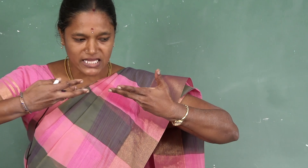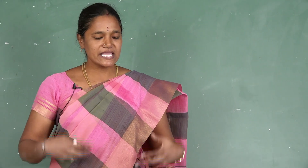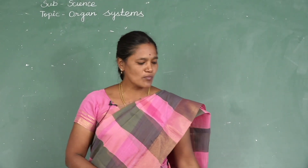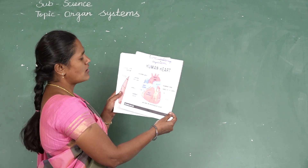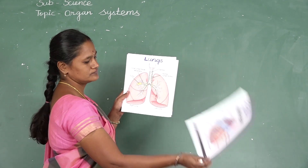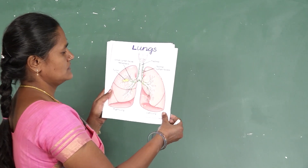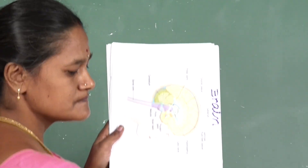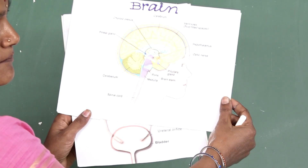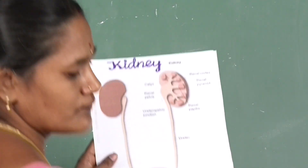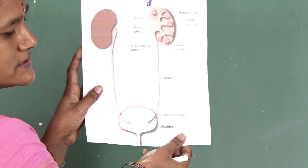There are many parts inside of the body. Such parts are called the internal organs. Some examples of internal organs are: heart, lungs, brain, and kidneys.